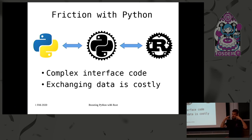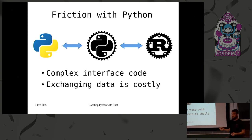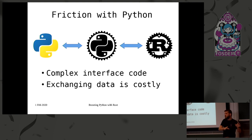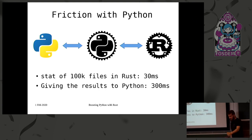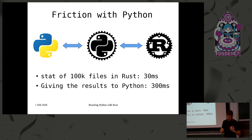Exchanging data in general is costly — allocating memory, moving memory around, looping on objects. And there's the GIL: you cannot do things in parallel because Python has the Global Interpreter Lock. If you're trying to communicate with Python, you still have to hold the GIL. On my laptop, if I try to stat 100,000 files in Rust in parallel with hot kernel caches, I get about 30 milliseconds of wall time. But then trying to give those results to the Python layer in any meaningful way adds an order of magnitude more on top, completely negating the usefulness of doing it in the first place.